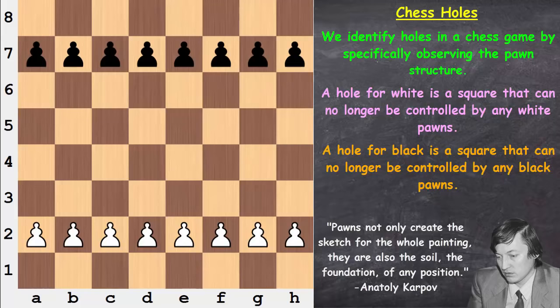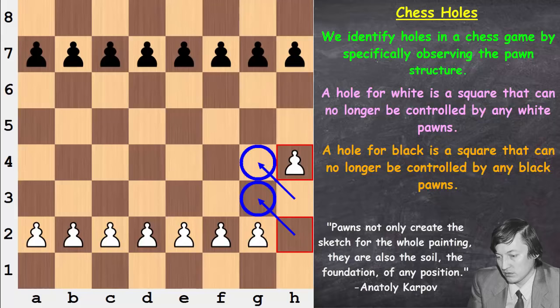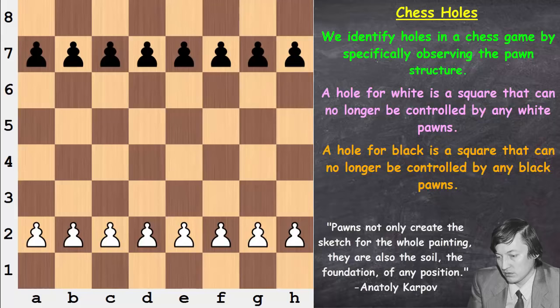Let's see how holes can be created with pawn moves. If white begins with H3, have any holes been created? No. One square was under white's control, but after the pawn moves, we still have another pawn controlling G3, so no holes. When a rook pawn moves one square, one square has been weakened. When a rook pawn moves two squares, two squares have been weakened — it no longer has the potential to go to H3 and control G4.